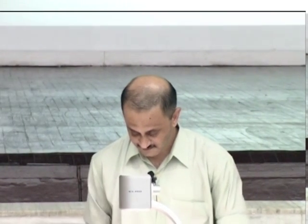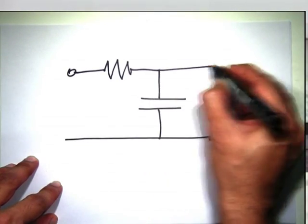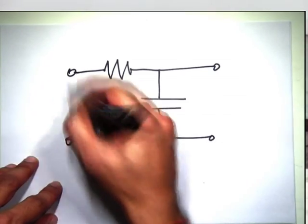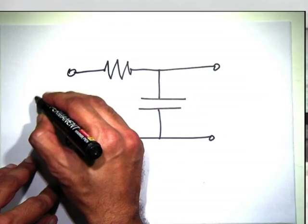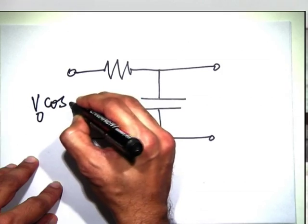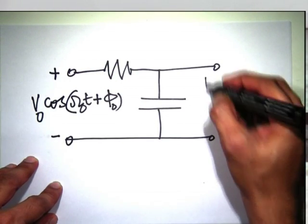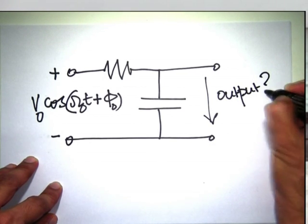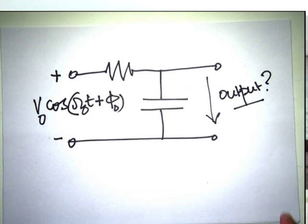All three elements relate voltage and current either proportionally or through a derivative. When you take the derivative of a sine wave of a certain frequency, it also results in a sine wave of the same frequency. When you add two sine waves of the same frequency, they form a sine wave of the same frequency. So when you apply Kirchhoff's laws, adding sinusoids of the same frequency yields a sinusoid of the same frequency — this is the basic premise.